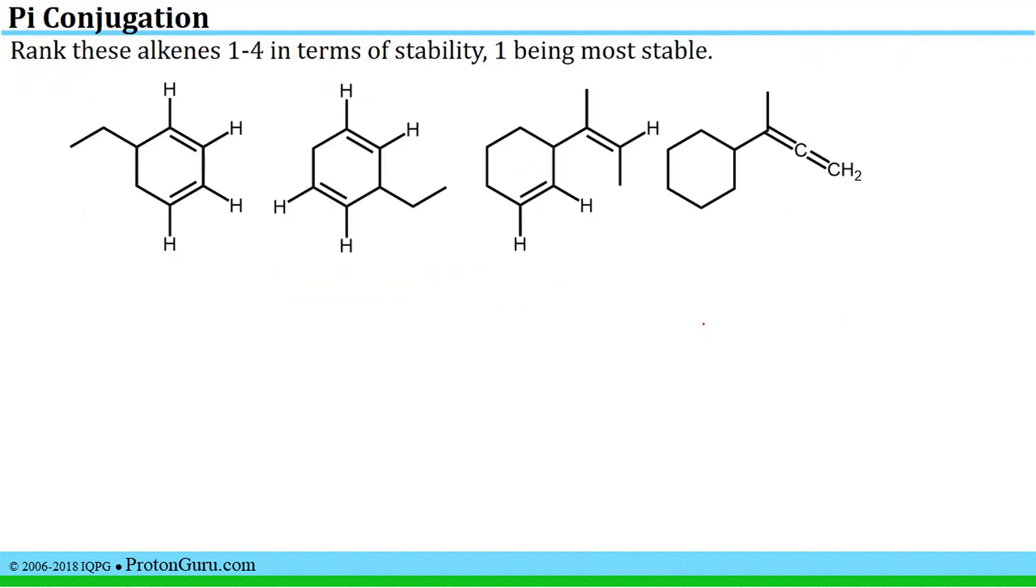Much of this lesson is about how pi conjugation contributes to the stability of alkenes. So naturally one type of question that you might be asked in terms of pi conjugation will be to rank alkenes in terms of stability as we see here. Since this question focuses on the alkenes you want to highlight those double bond areas of the molecule because you're really only looking at the alkenes and figuring out their relative stability. You can see that each of these molecules has two pi bonds in its structure.